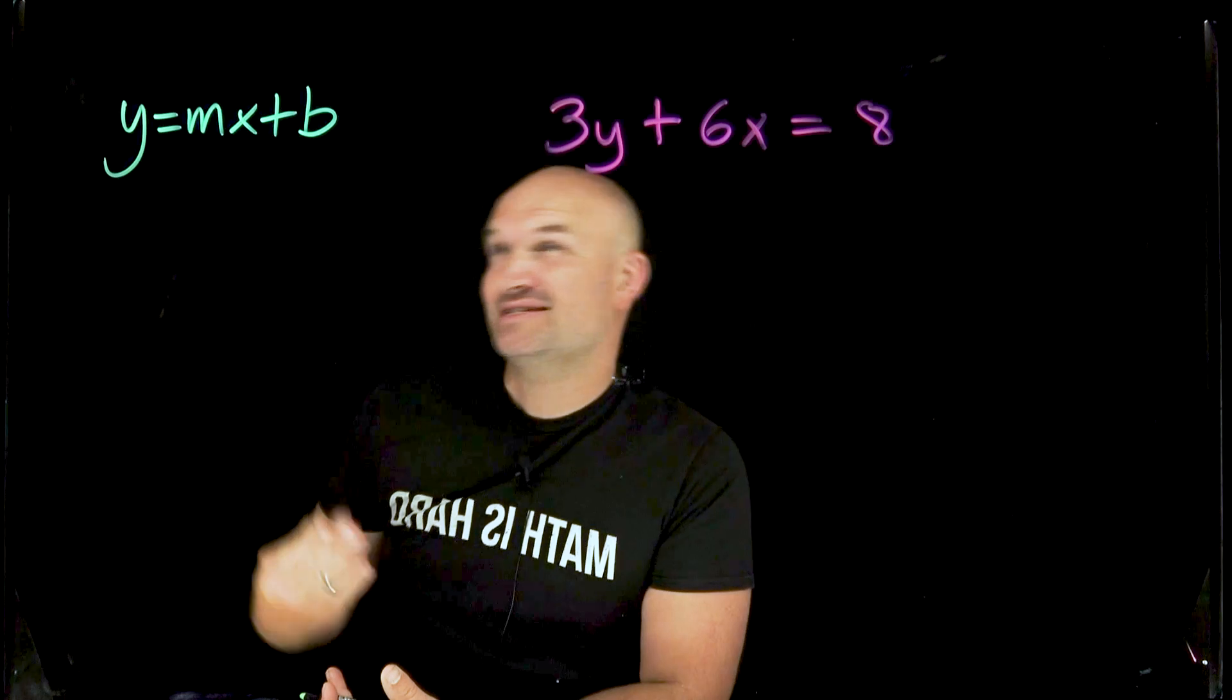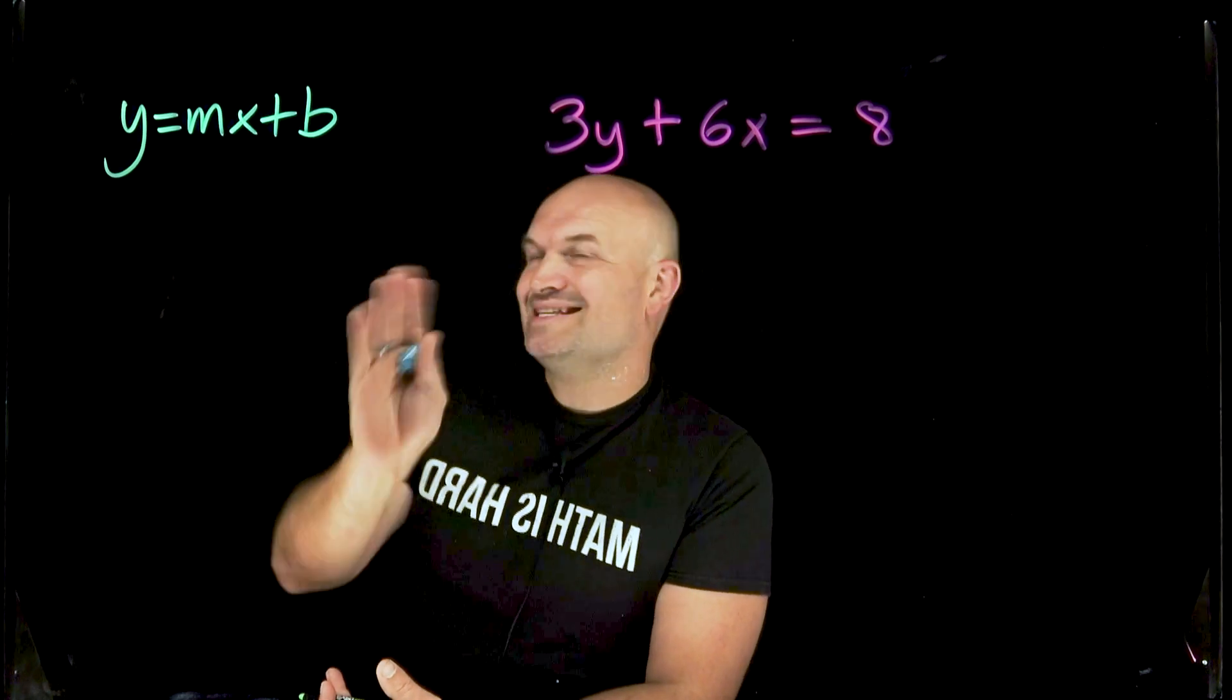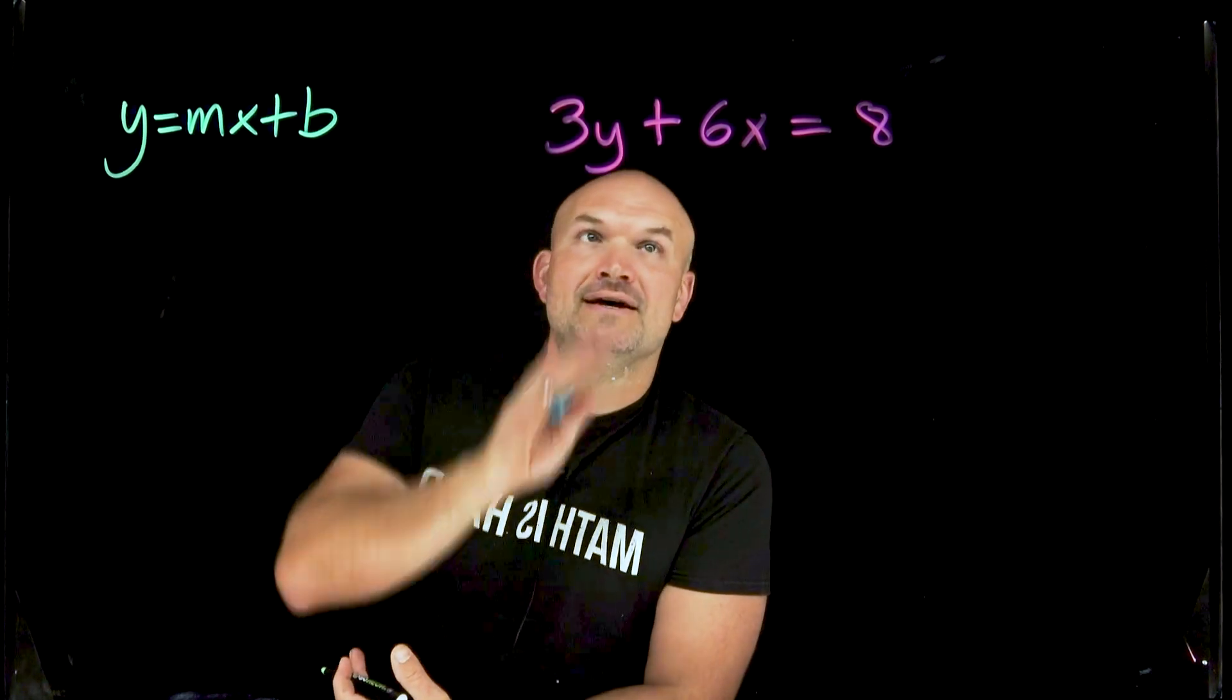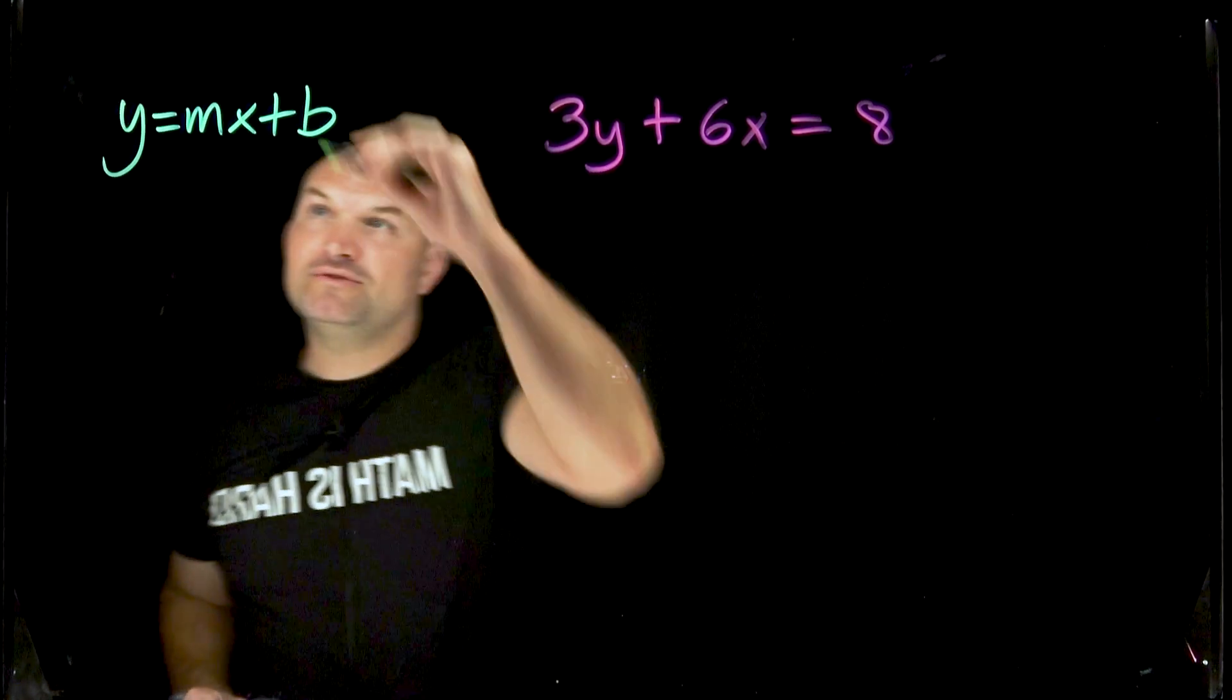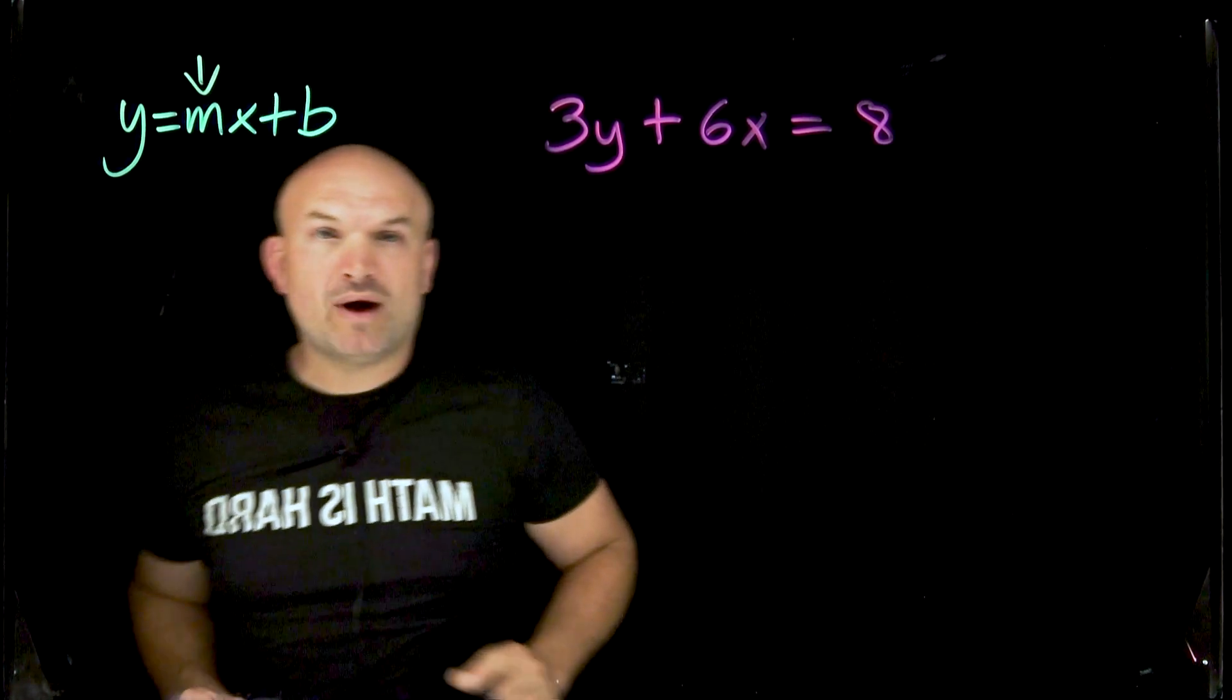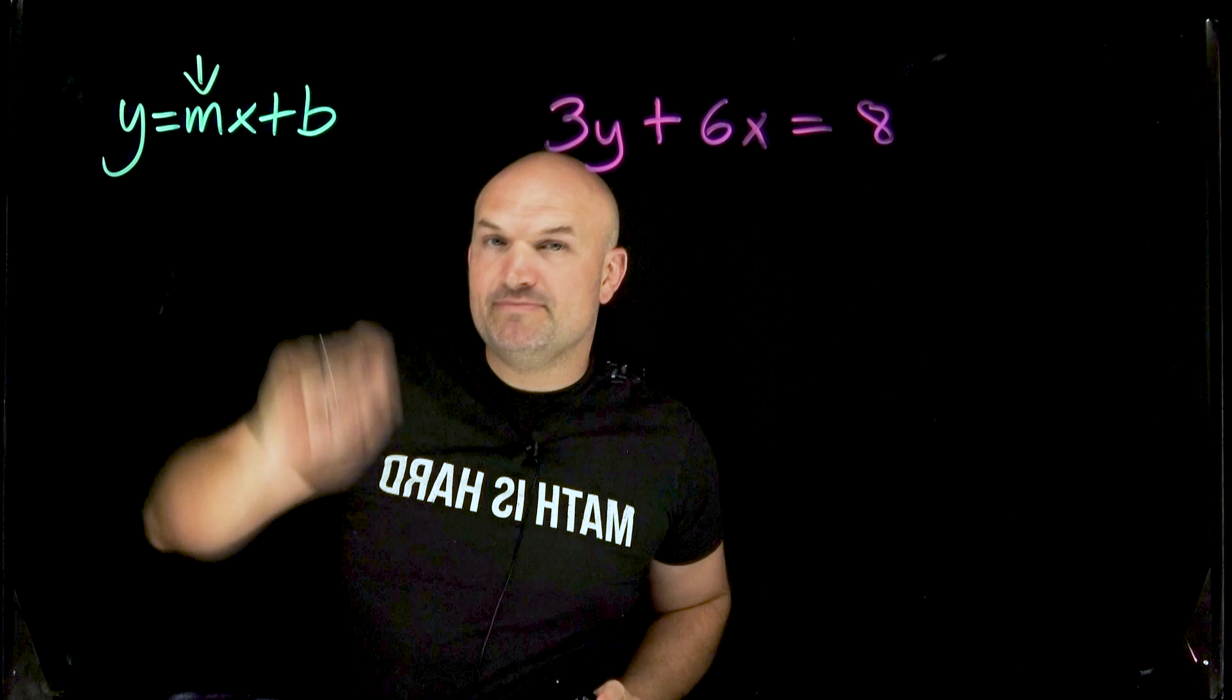Now some students will make mistakes in this process but that's not really the mistakes I want to hit at. So let's just make sure we identify the slope that we're going to be looking for in y equals mx plus b form is going to be the m.